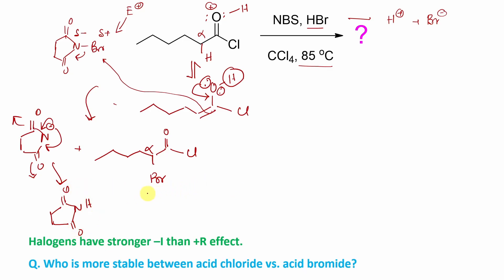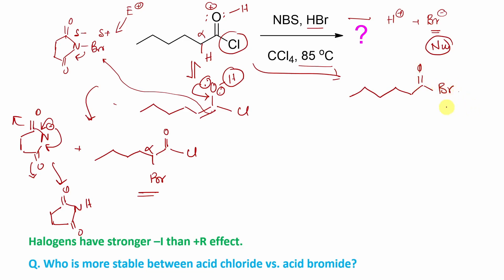You may ask: there was a bromine-minus which can act as a nucleophile, so why can't bromine-minus replace the Cl-minus? That is, why is carboxylic acid bromide not produced instead? This is because, as you have seen, acid chloride is produced in many places — for example, if you treat carboxylic acid with thionyl chloride or phosphorus pentachloride, you get acid chloride. But have you seen acid bromide? I guess not.